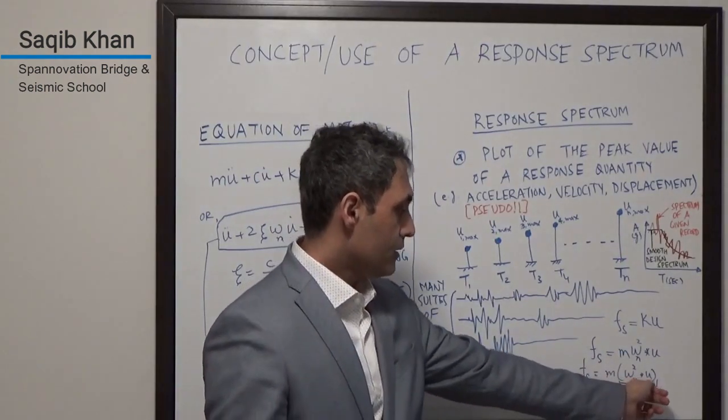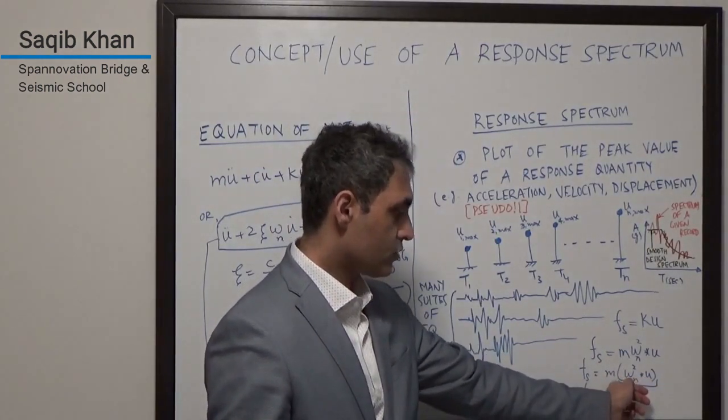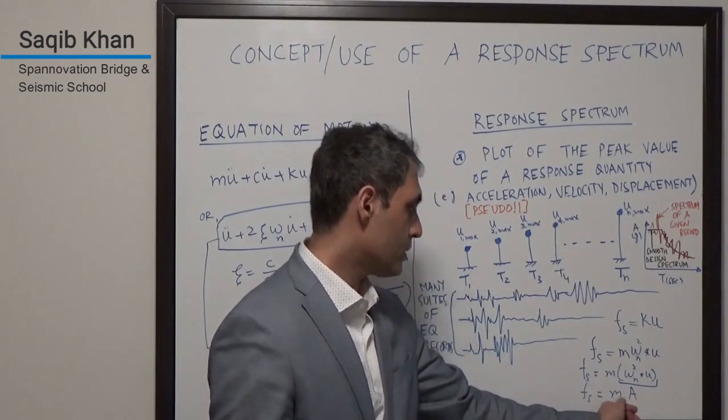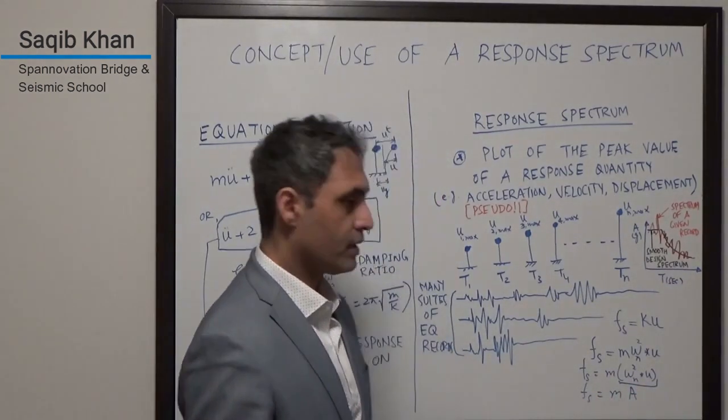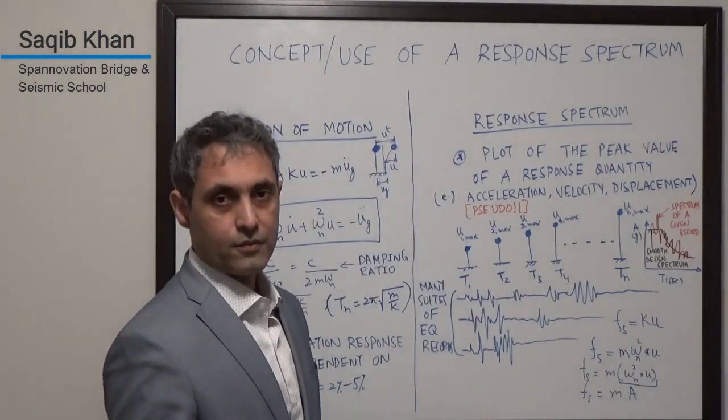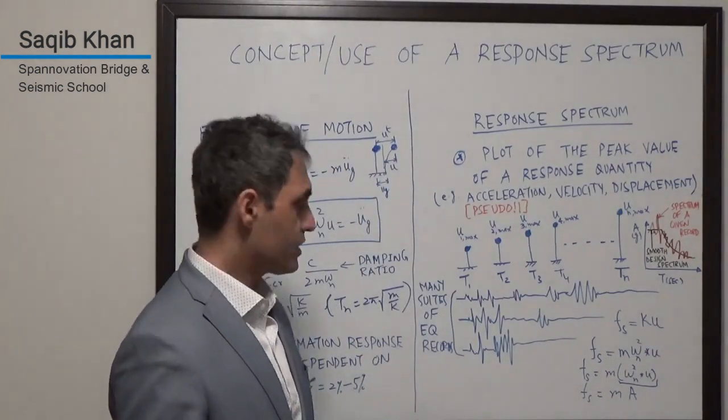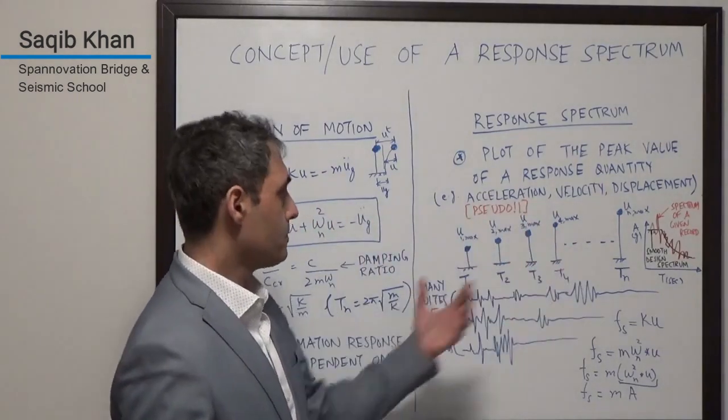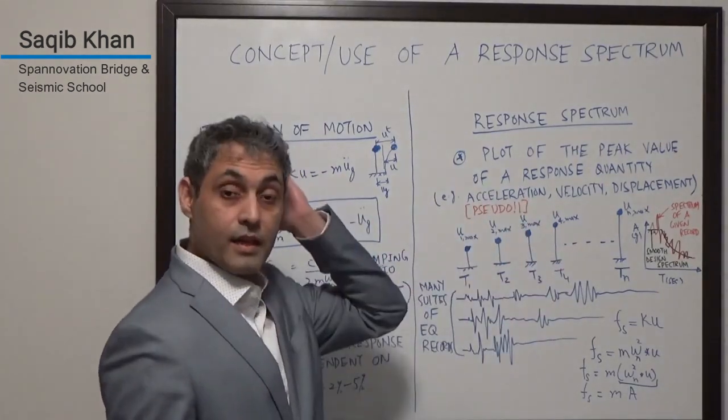You multiply the displacement with the square of the natural frequency to get that pseudo-acceleration. When you multiply that number with the mass of the system, you get the pseudo-static force, or the equivalent force that you need to now apply to that particular system, and then analyze it and design it.